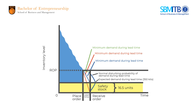Assuming that demand during lead time follows a normal curve, only the mean and standard deviation are needed to define the inventory requirements for any given service level. This was the normal distribution probability of demand during lead time, and this was the expected demand during lead time. When Linda receives an order exactly when she hits safety stock, she can avoid stockout for her fashion retailer.